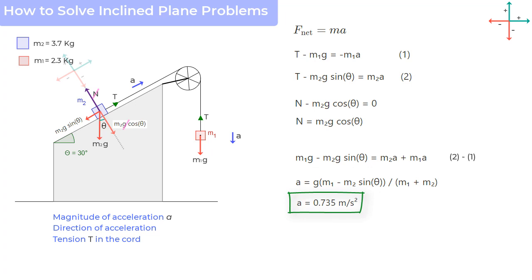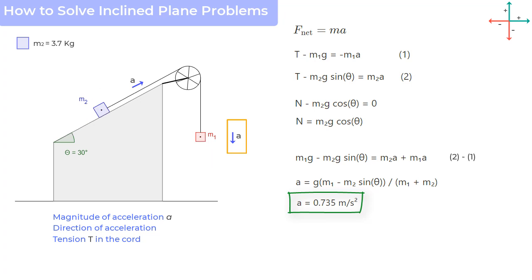And now is the time to revisit our assumption of direction of a we made earlier and find if it was correct or not. So we see that since a has turned out to be a positive number, and that is what we had started with, that is, a was a positive number, then we can say that our initial assumption that direction of motion of m1 is downwards and m2 is up was correct.